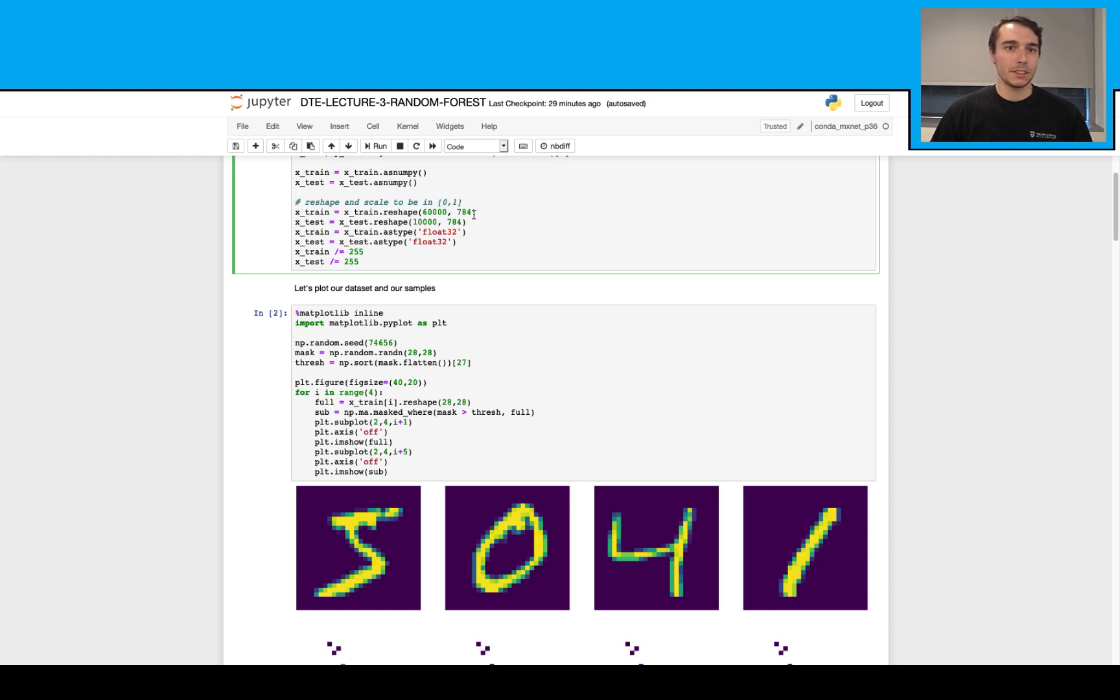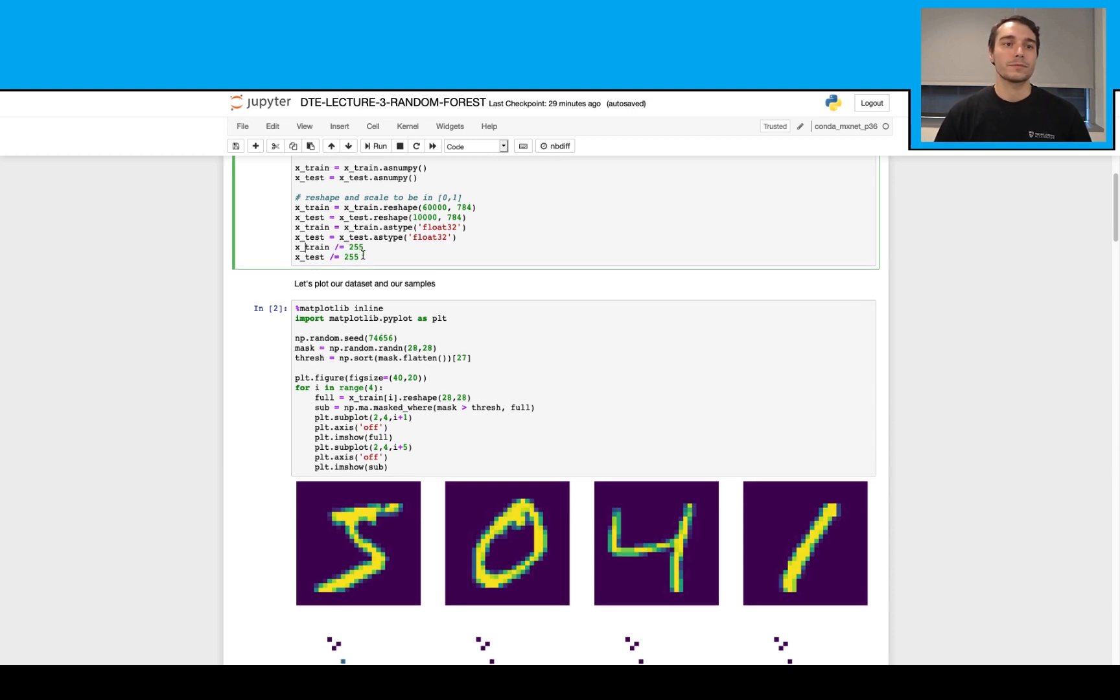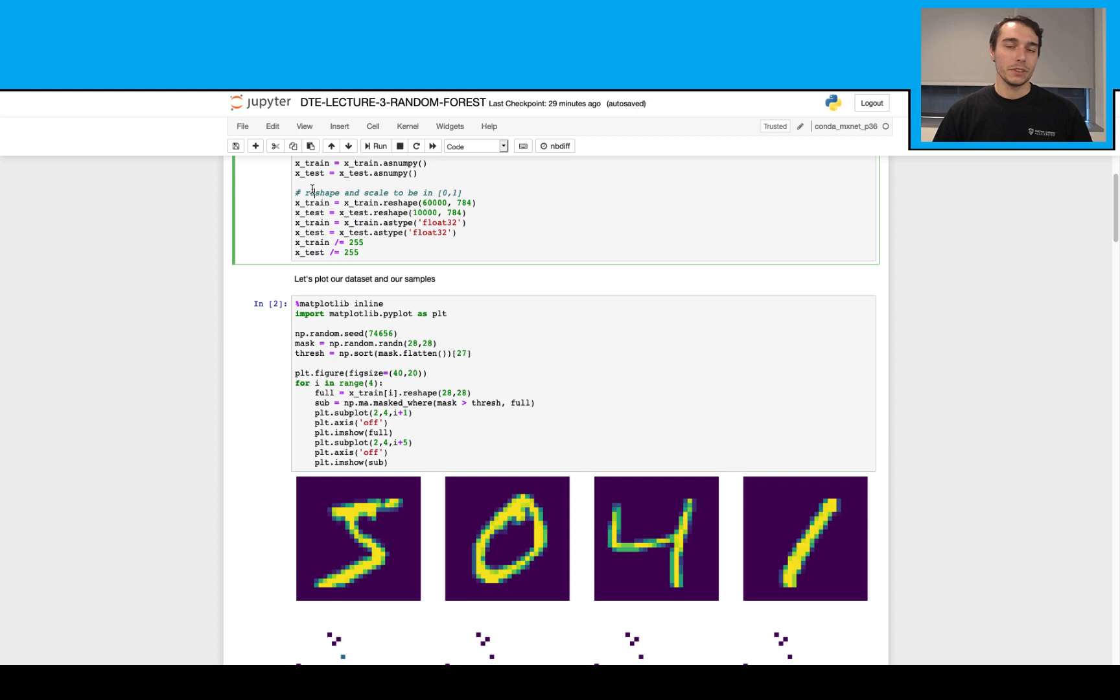Then I do a little bit of extra work here. For example, I reshape the data to this because the data itself is 28 by 28 pictures. So I just flatten them here. Then I also normalize them by dividing it by the 255 here. So that I have values between 0 and 1.